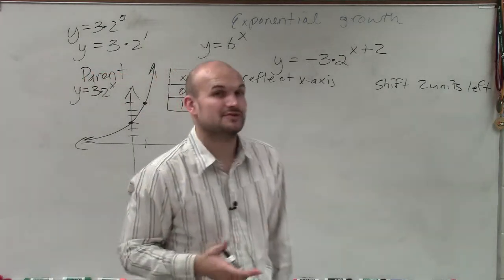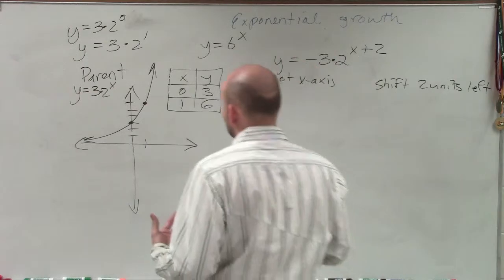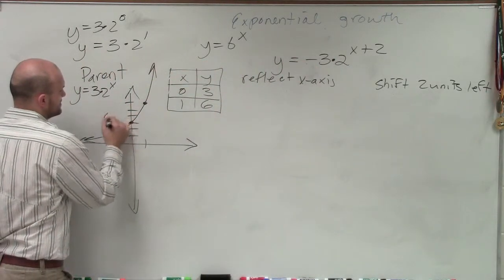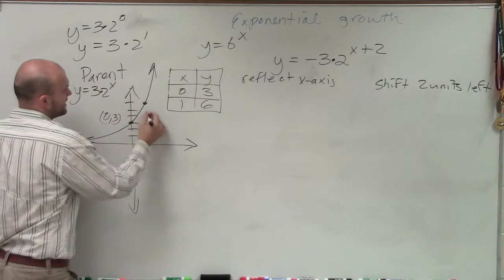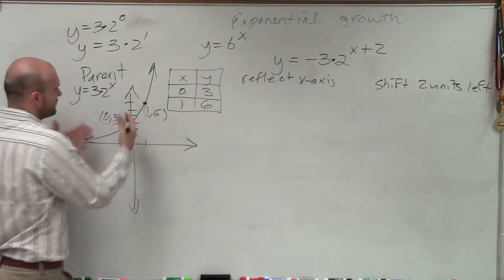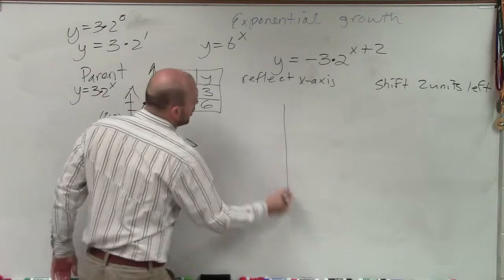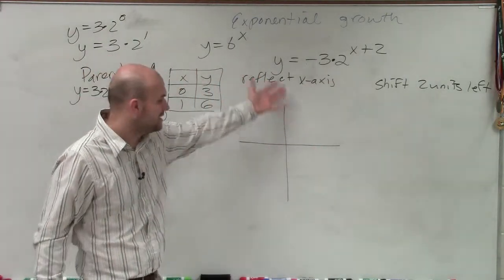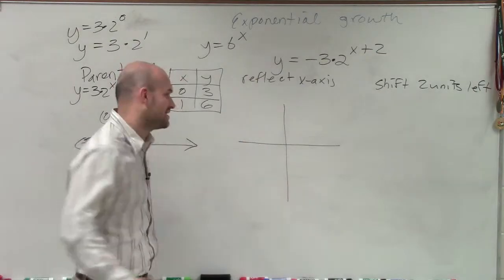So now what we need to do is now go ahead and determine what exactly are going to be a reflection. Well, if my graph has these coordinate points of 0, 3, and 1, 6, when I reflect this graph over the y-axis, now all my points, instead of being in the positive two quadrants for y, they're now going to be reflected into the negative two quadrants.